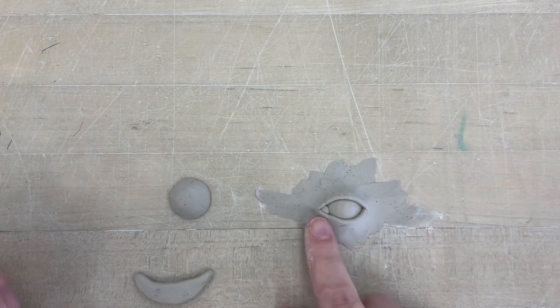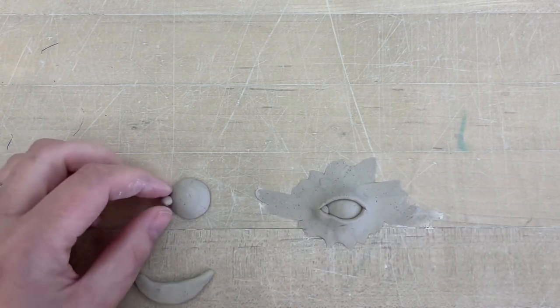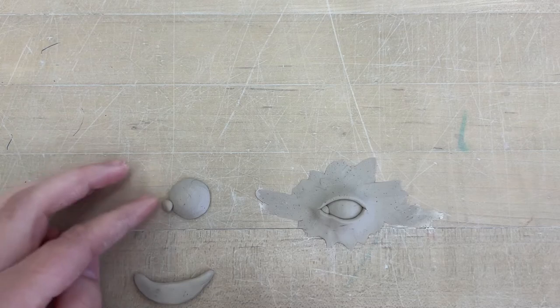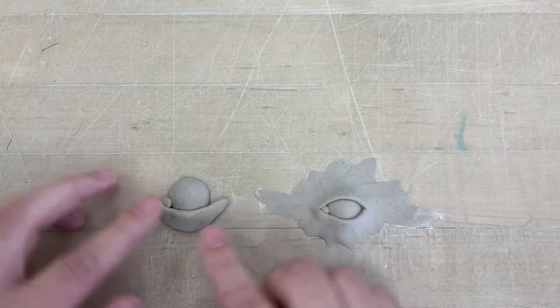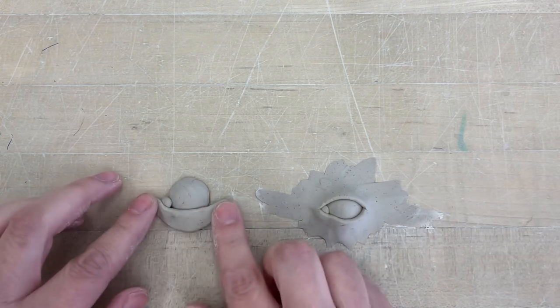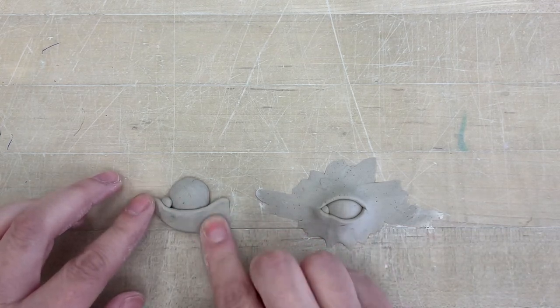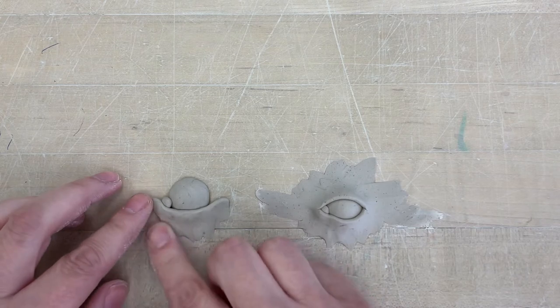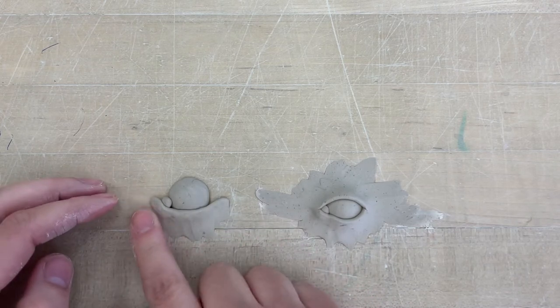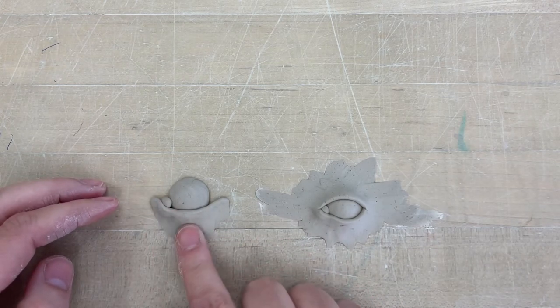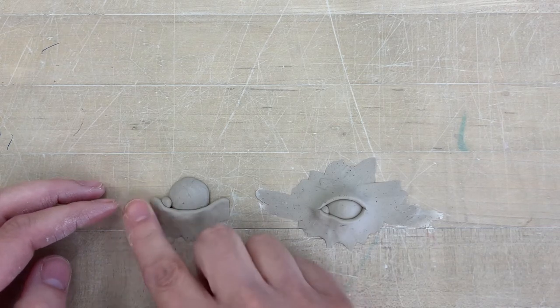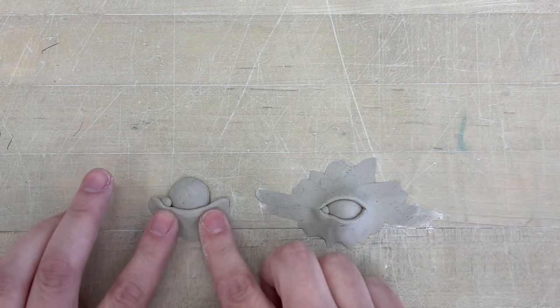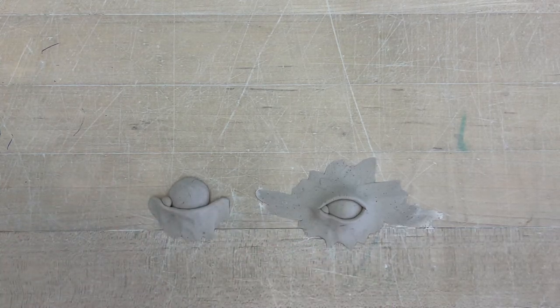You can add in that little ball there if you want. Then you're going to lay this over the top so it overlaps. When you blend, you're just going to blend the back side. Notice how my finger is not going all the way up here, it's only coming down on this bottom edge. I'm not going up to the top edge because that's going to ruin that edge.